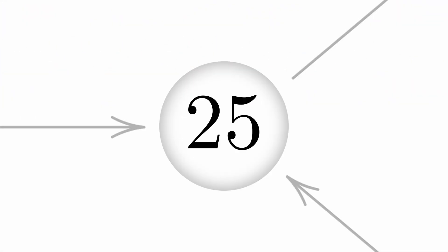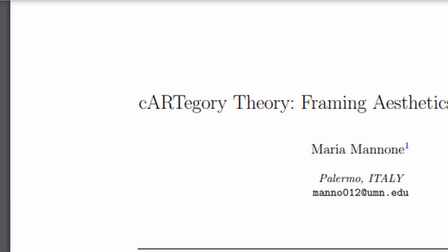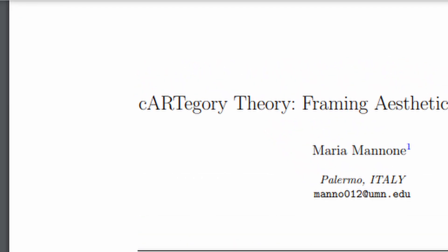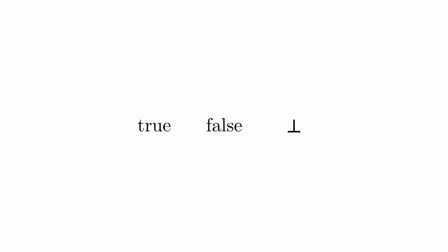Fact 25: Some people are tentatively applying category theory to the arts with a framework called Category Theory. Fact 26: In certain categorical constructions of mathematical logic, things can be true, false, or bottom.